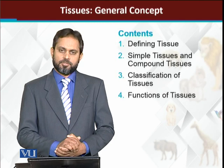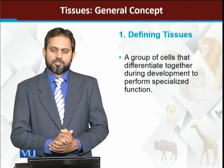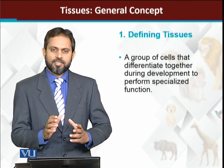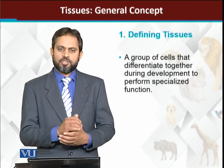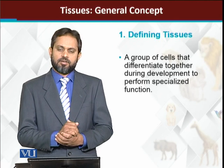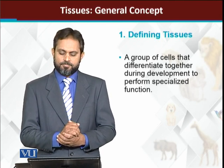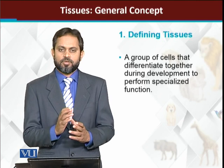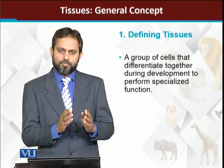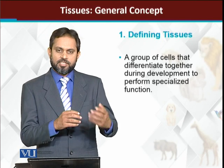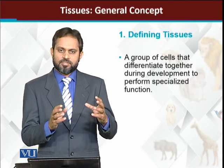So first, the definition. A tissue is basically a group of cells which differentiate together during the developmental process for performing a single job or single function. So you can say that tissue cells are a group of cells that go through the developmental process together — all the cells differentiate together.